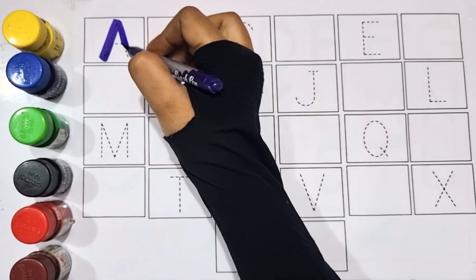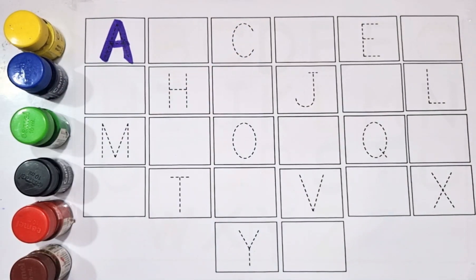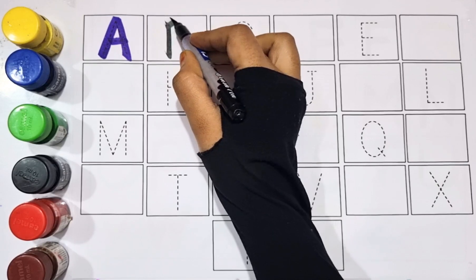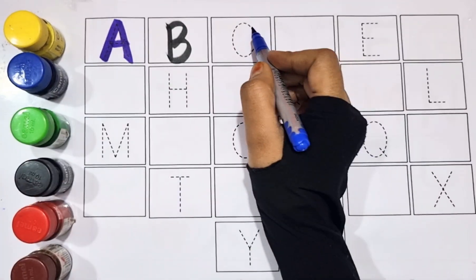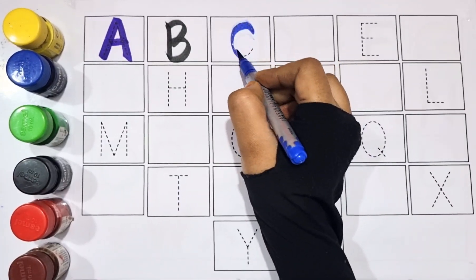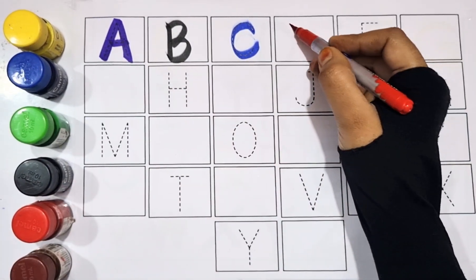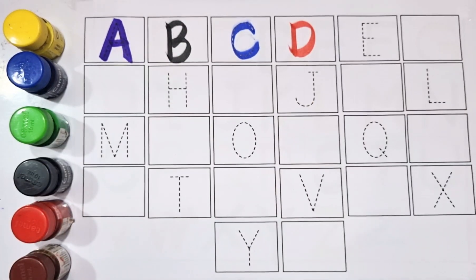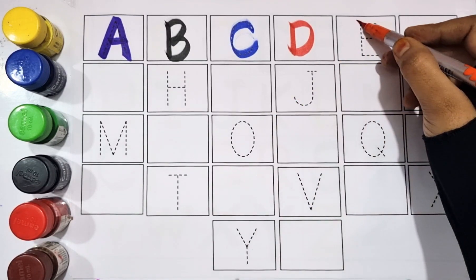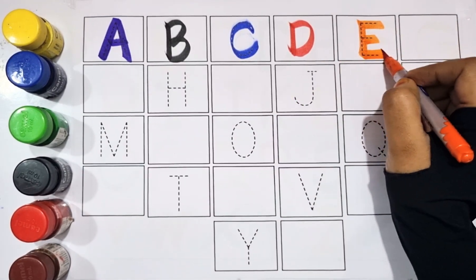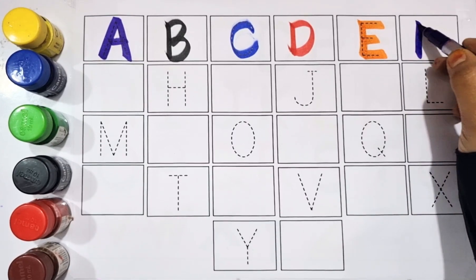Violet color. A, A for apple, A for apple, black color. B, B for ball, B for ball, blue color. C, C for cat, C for cat, red color. D, D for dog, D for dog, orange color. E, E for elephant, E for elephant, violet color.